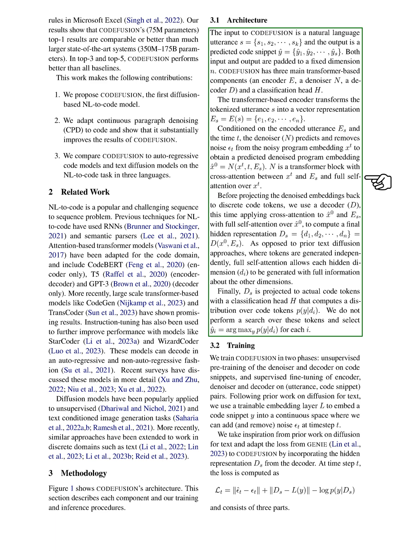Finally, the hidden representation is projected to actual code tokens with a classification head that computes a distribution over code tokens. We do not perform a search over these tokens and select the token with the highest probability for each index.